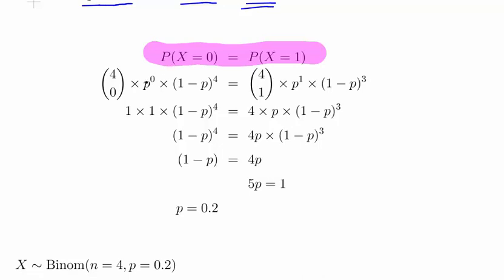So the probability of X equal to 0 is 4 choose 0, which is 1, times p to the power of 0, which is 1, times 1 minus p to the n minus k, which is 4, the number of failures. In this case that would be 1 minus p to the power of 4. The probability of X equal to 1 is 4 choose 1, times p to the power of 1, times 1 minus p cubed. 4 choose 1 is 4, p to the power of 1 is p, and therefore we have left with 1 minus p cubed.